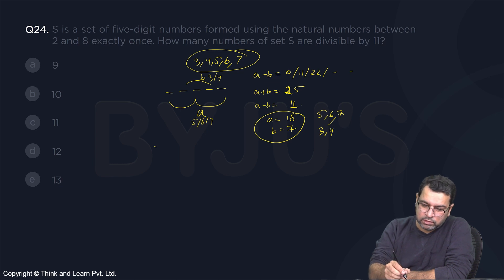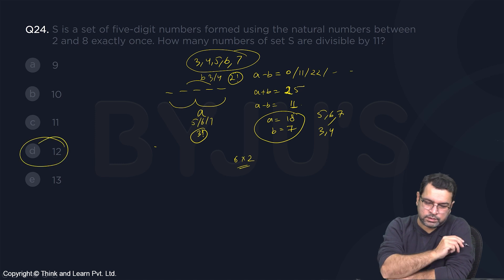Obviously they can interchange among themselves. So this can be arranged in 3 factorial ways, and this can be arranged in 2 factorial ways. So 6 times 2, that is 12.